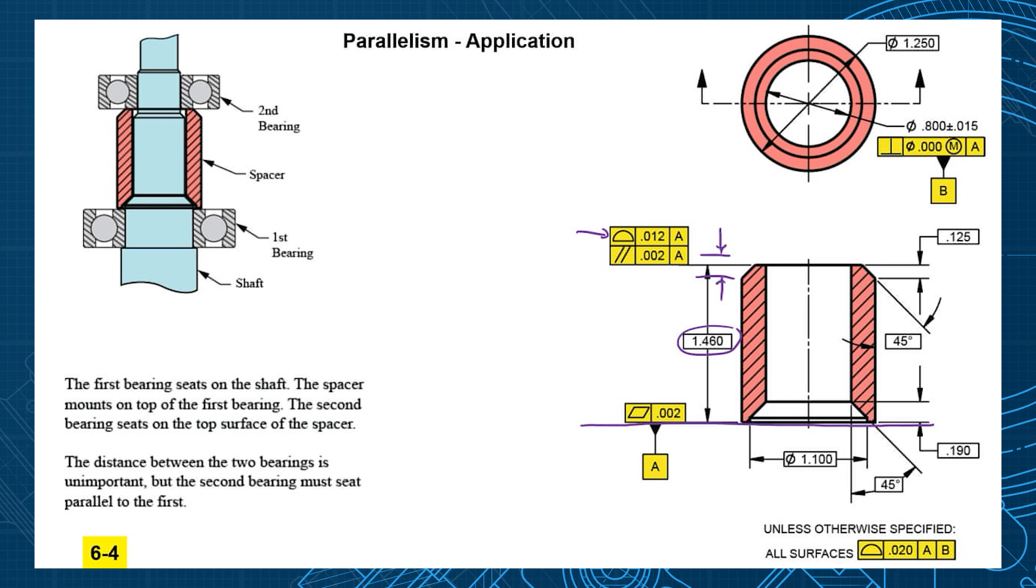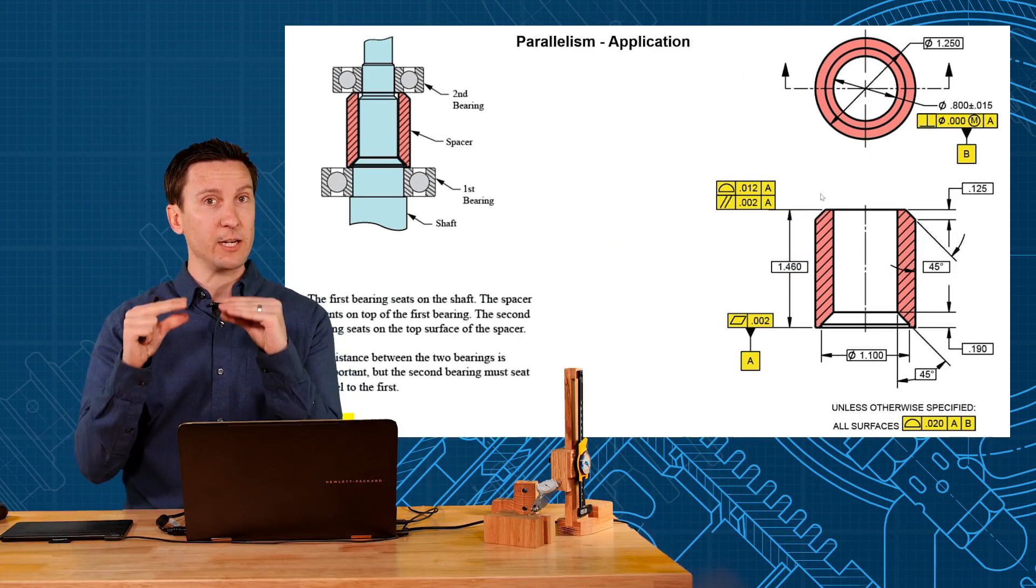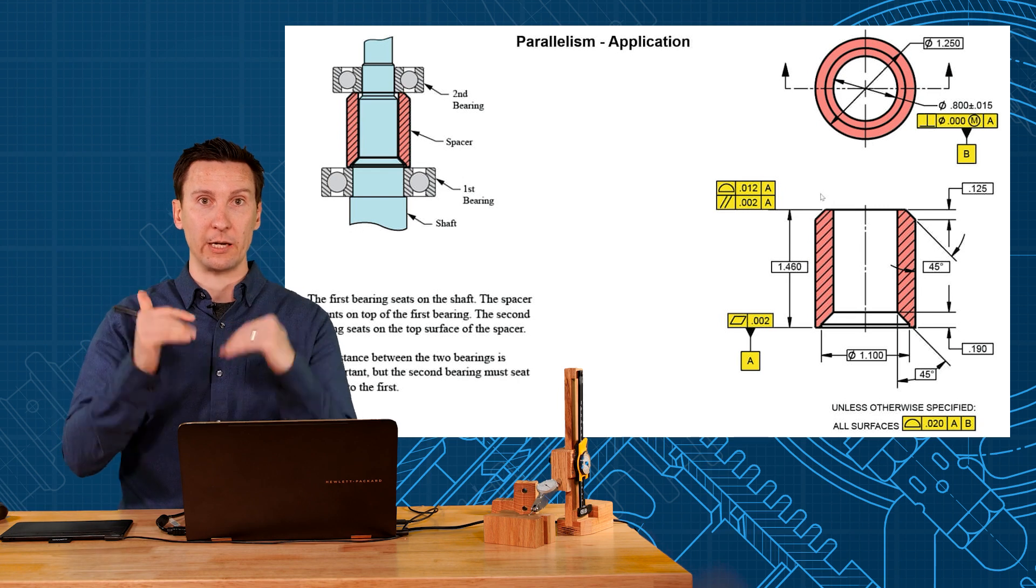Profile tolerance is equally distributed, so you have a 12 thousandth total zone. That means the surface could be plus six or minus six from ideal. But the surface can't tilt plus or minus six, so that's why we add a parallelism. The parallelism is a refinement to control the tilt or the angle.